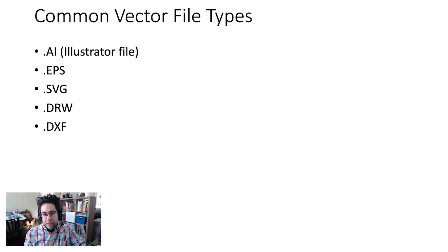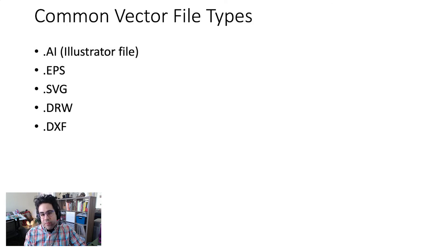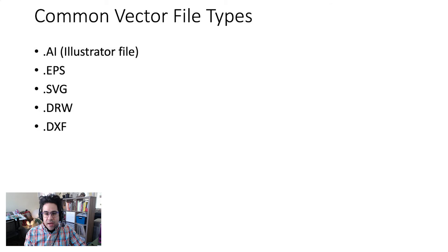Some common vector file types that you may work with include the .ai — that is the Illustrator equivalent of the PSD file — as well as EPS, SVG, DRW, and DXF. In this unit, we'll mainly be working with the .ai Illustrator file.